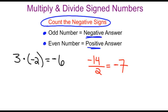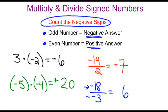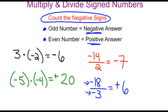Now, what if we had negative 5 times negative 4? Well, 5 times 4 is 20, and we're going to count the negative signs. We have two negative signs in this problem — one on the 5 and one on the 4. Since 2 is an even number, that means our answer will be positive. Let's try another one: negative 18 divided by negative 3. Well, 18 divided by 3 is 6. Counting the number of negative signs, we have 1, 2 negative signs. 2 is an even number, which means our answer will be positive.